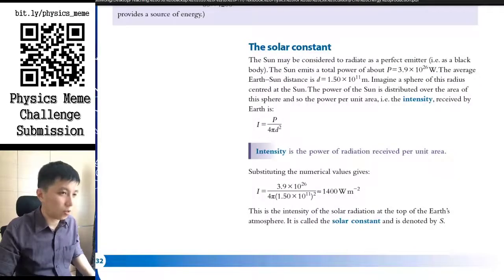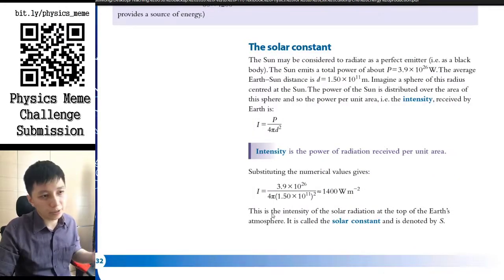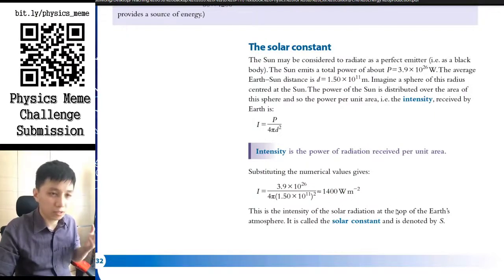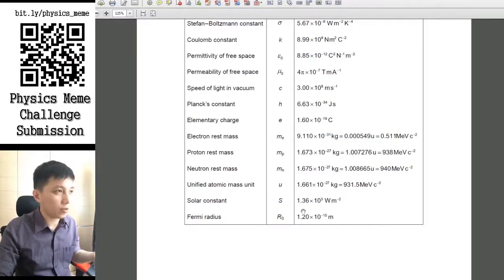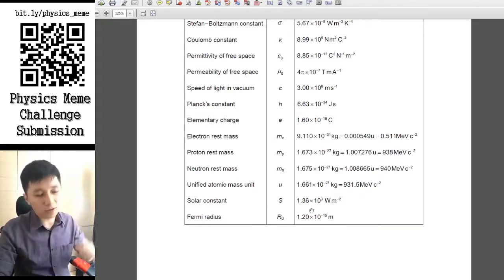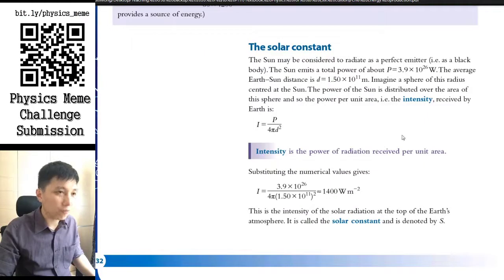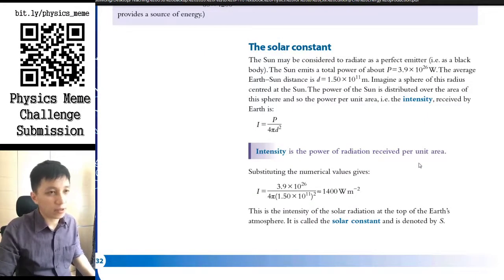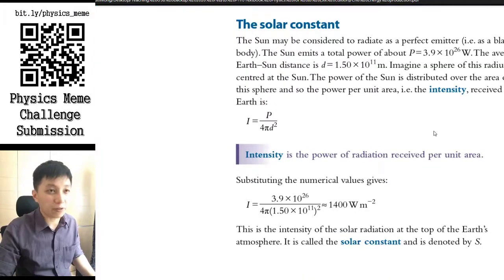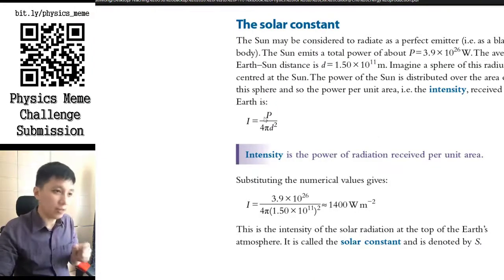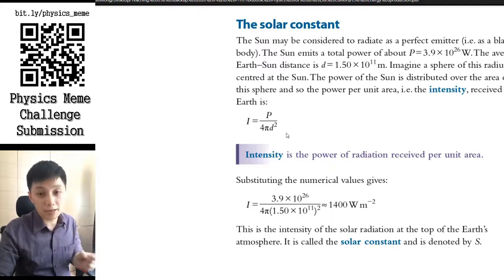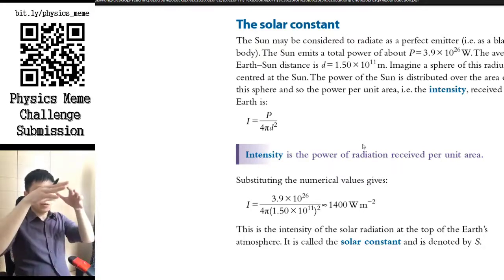In your textbook you can derive that the solar constant equals approximately 1400 watts per meter squared, and similarly on the data booklet you also find this number — solar constant roughly 1400 W/m². This is found using the fundamental definition of intensity: I = P/A, where A refers to the spherical area that the Sun's light covers.